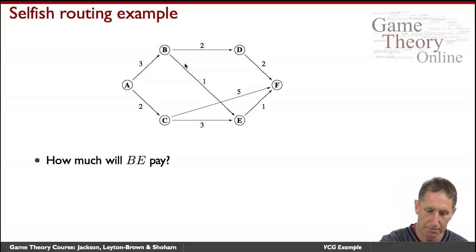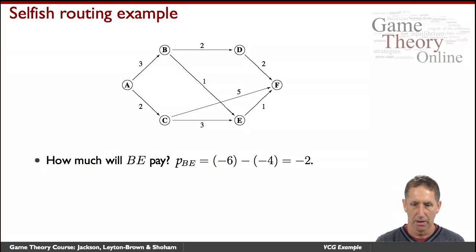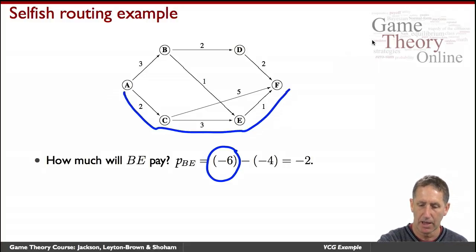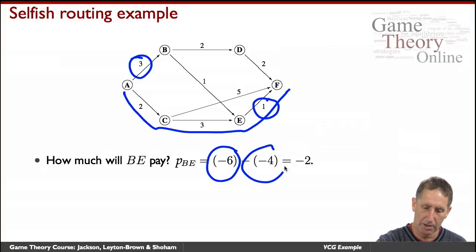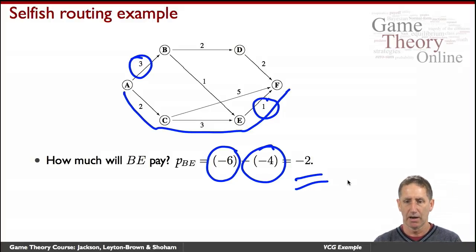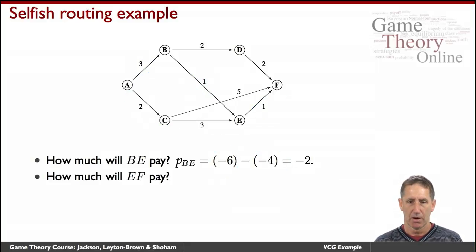How much will AB pay? The shortest path taking AB's declaration into account has length 5, and imposes cost 2 on other agents. The shortest path without AB is ACEF, which has cost 6. Thus p_AB = (-6) - (-2) = -4. What about BE? Same analysis. BE, the cost without them is -6, with them is -4. So p_BE = (-6) - (-4) = -2. They get a payment of 2, making a profit of 1.